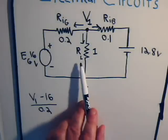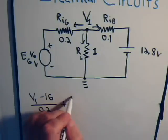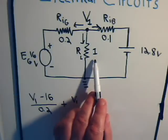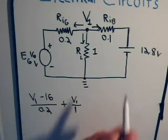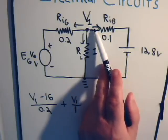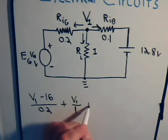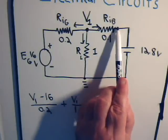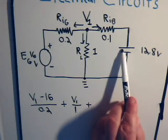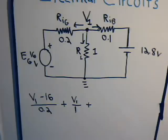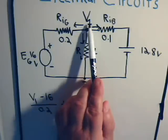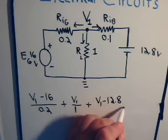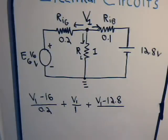For RL, it's simply going to be plus V1 divided by the resistance — that's 1 ohm. Now for this resistor, we're assuming the current is going away from the node. The voltage V1 is trying to push the current through the resistor in this direction, but the battery with its positive polarity would be trying to push current in the other direction. So the net current flow in this direction would be V1 minus 12.8, divided by the resistance of one-tenth of an ohm, and that equals zero.